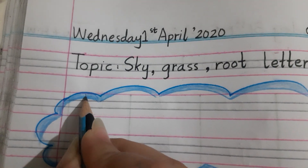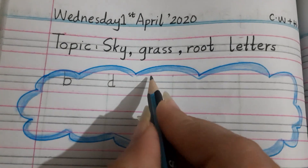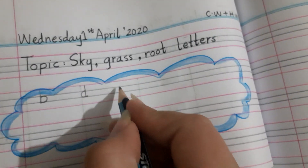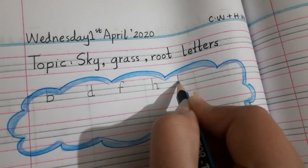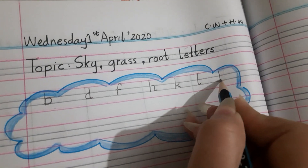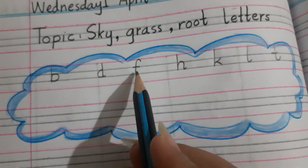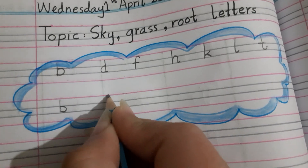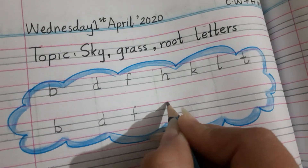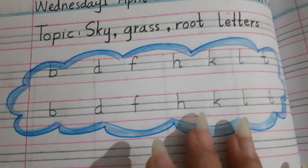The first sky letter is B. Give one finger space, now write D. Then F, H, K, L, and T. You have to write properly on the lines. As you can see, I have started from the first line, which is pink in color: B, D, F, H, K, L, T. These are the seven sky letters. You have to write them again in this cloud: B, D, F, H, K, L, T.